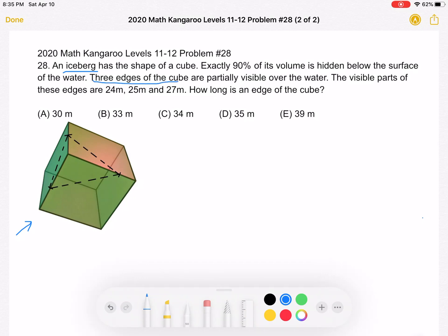For our purposes, let's say that these are the three edges that are visible. And they have lengths 24 meters, 25 meters, and 27 meters. And we want to find the length of the edge of the cube.